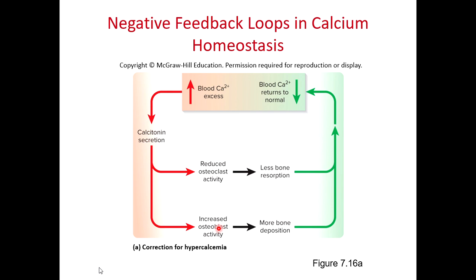Looking at the negative feedback loop for calcitonin: the stimulus is too much blood calcium; we release calcitonin in response; the response is to lower blood calcium. Because the response is opposite to the stimulus, this is a negative feedback loop — calcitonin corrects for hypercalcemia.